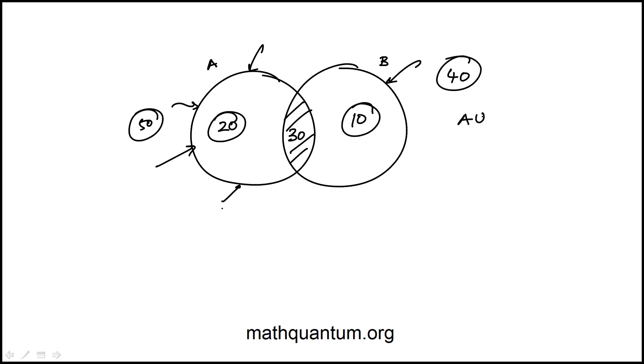Now they're asking how many elements are in the union, which means we're looking at the total number of elements that are in either A or B, which is really just adding these regions. So 20 plus 30 plus 10, which is 60.